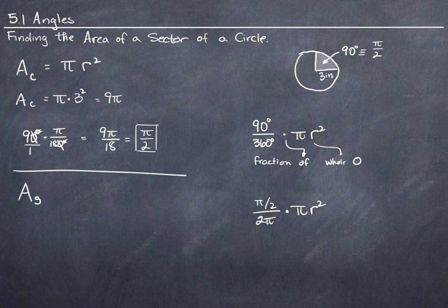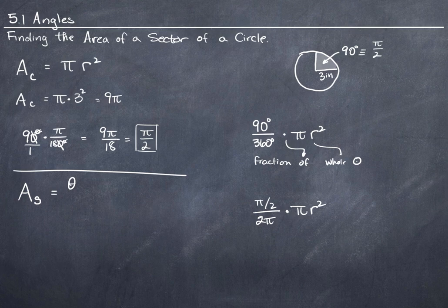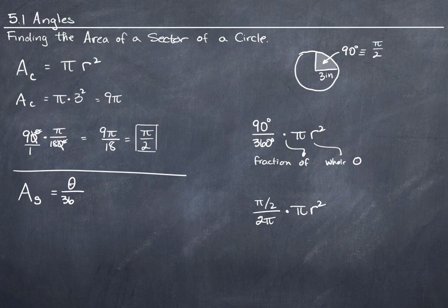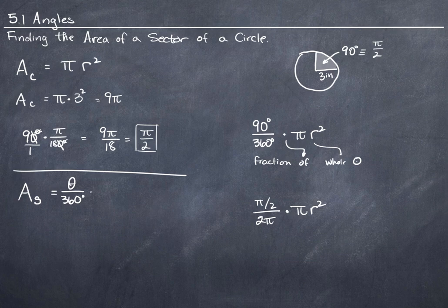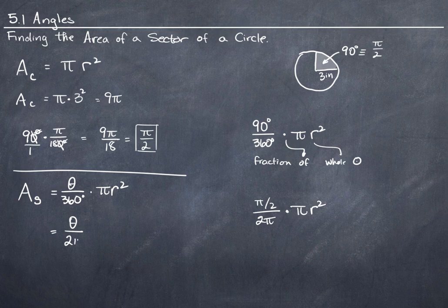You don't need to memorize it as much. You just need to know what's happening. The area of a sector is equal to theta, which is the angle that you're given, 90 degrees or pi over 2 in this case. It's going to be different for every problem. Theta divided by 360 times pi r squared.